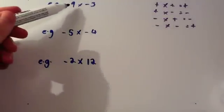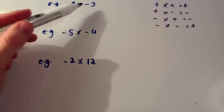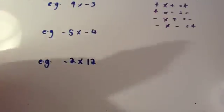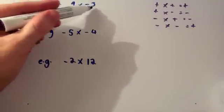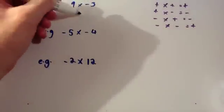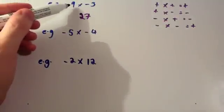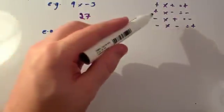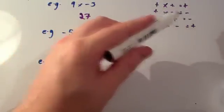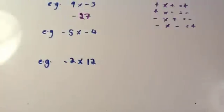Example 1: we've got 9 times negative 3. We've got a positive times a negative. The first thing I do is not worry too much about the sign and just look at 9 times 3. Well, 9 times 3 is 27, so it's going to be something to do with 27. Then, positive times a negative is a negative because they're different to each other. So the answer is negative 27.